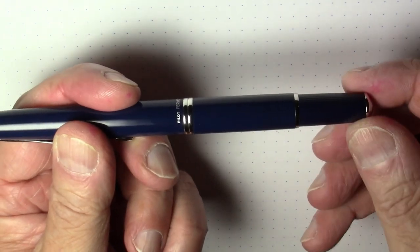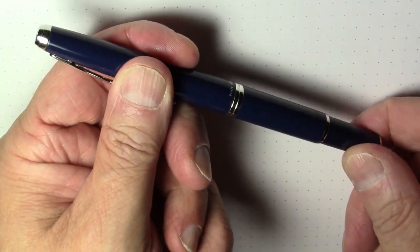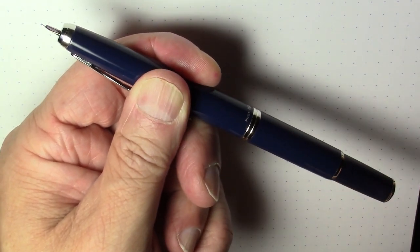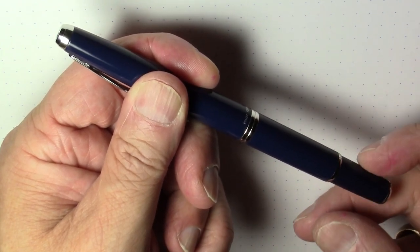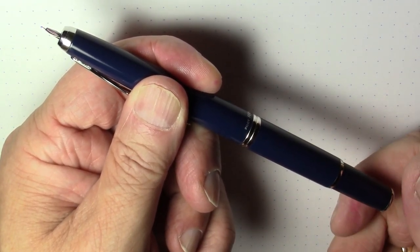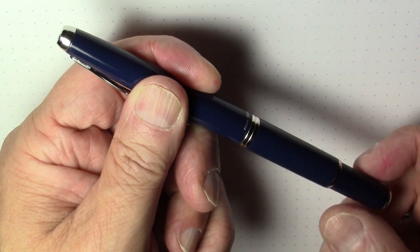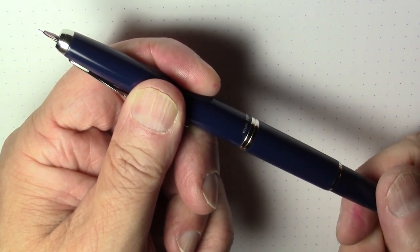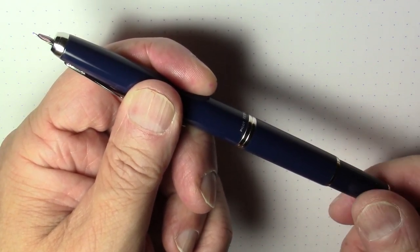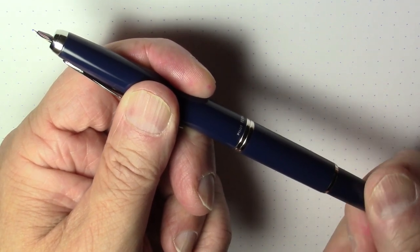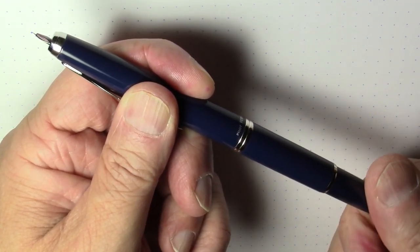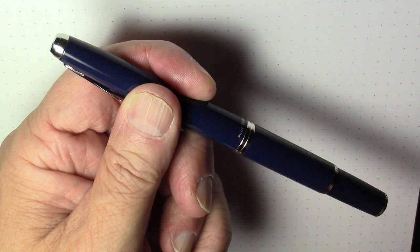The Fermo has a twist to open. So you twist the back and you twist it back to retract. Now it's got a spring action so when you twist it back you only have to start twisting a little bit and then the spring sort of takes it the rest of the way. So you have a little bit of spring resistance opening and then it closes right back up easily.